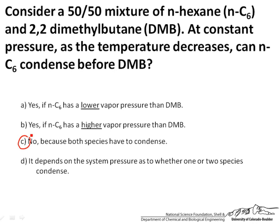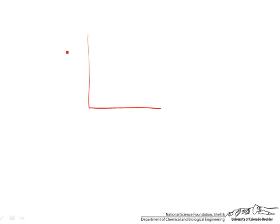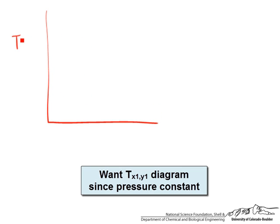So let's look at this a little bit in a different way aside from just asserting it. This problem, if I back up, says that you have a 50-50 mixture at constant pressure and you're decreasing the temperature. So that suggests that we want to do a T-X-Y diagram.